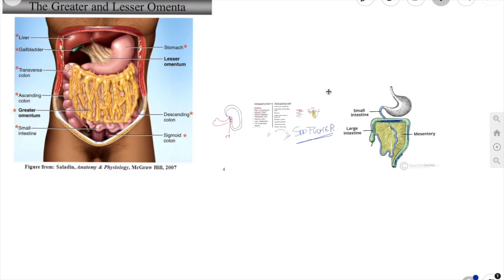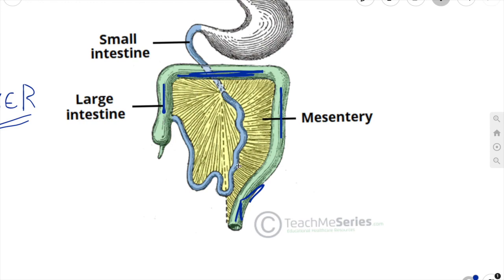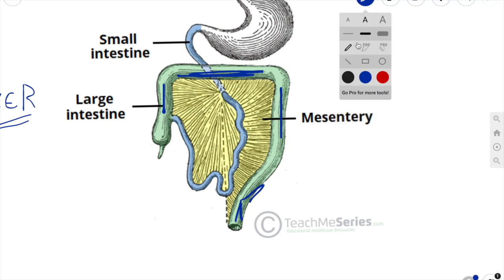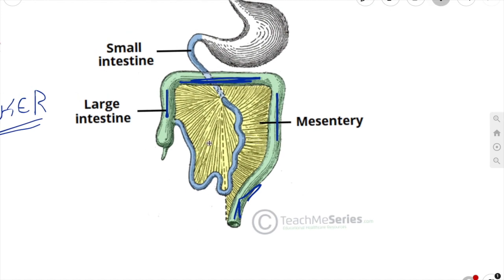First we're talking about the mesentery. The mesentery is a double layer of visceral peritoneum. It connects an intraperitoneal organ to the posterior abdominal wall and provides a pathway for nerves, blood vessels, and lymphatics to travel from the body to the viscera. The mesentery of the small intestine is simply called the mesentery.